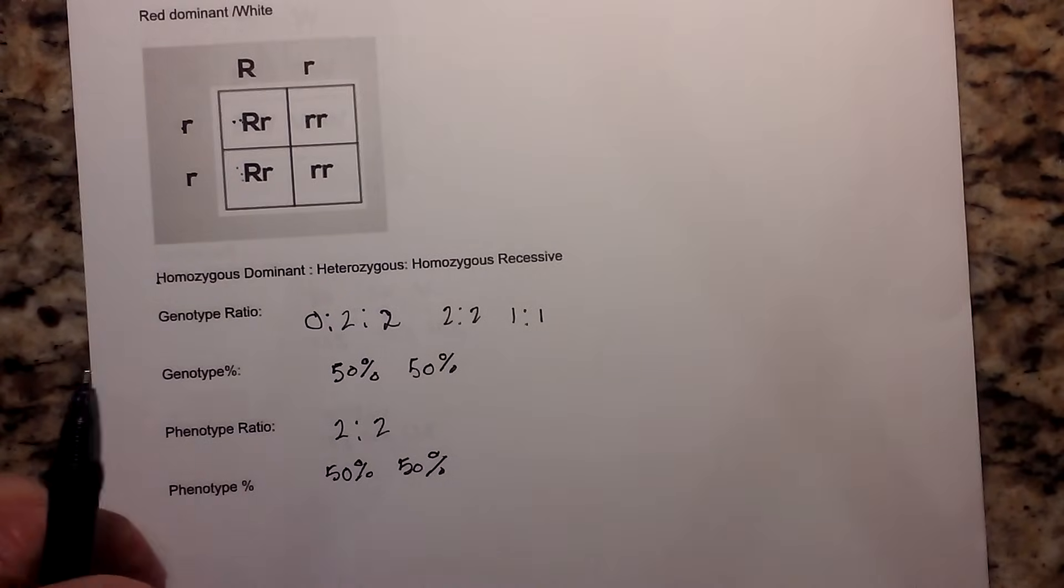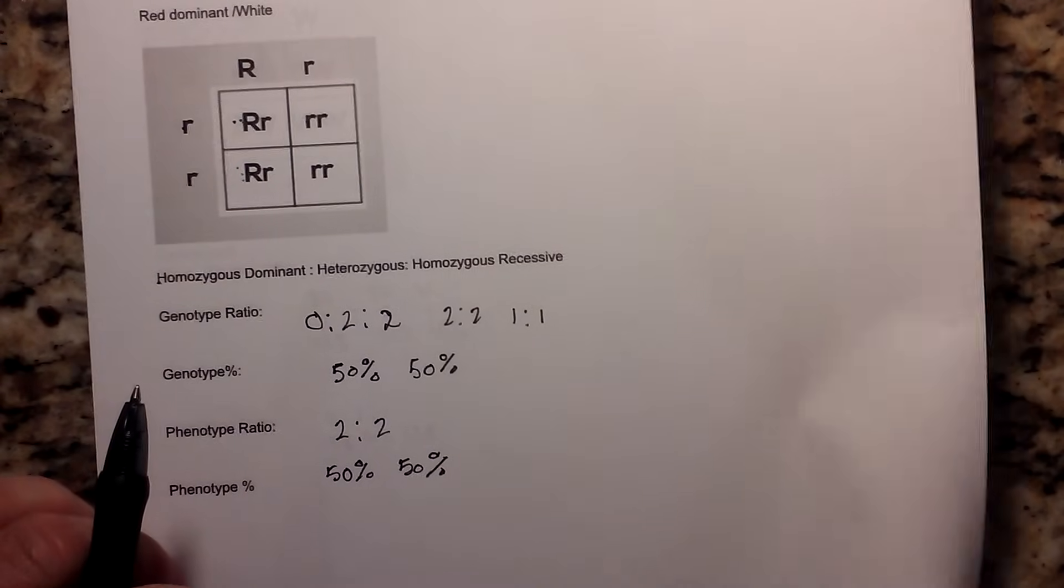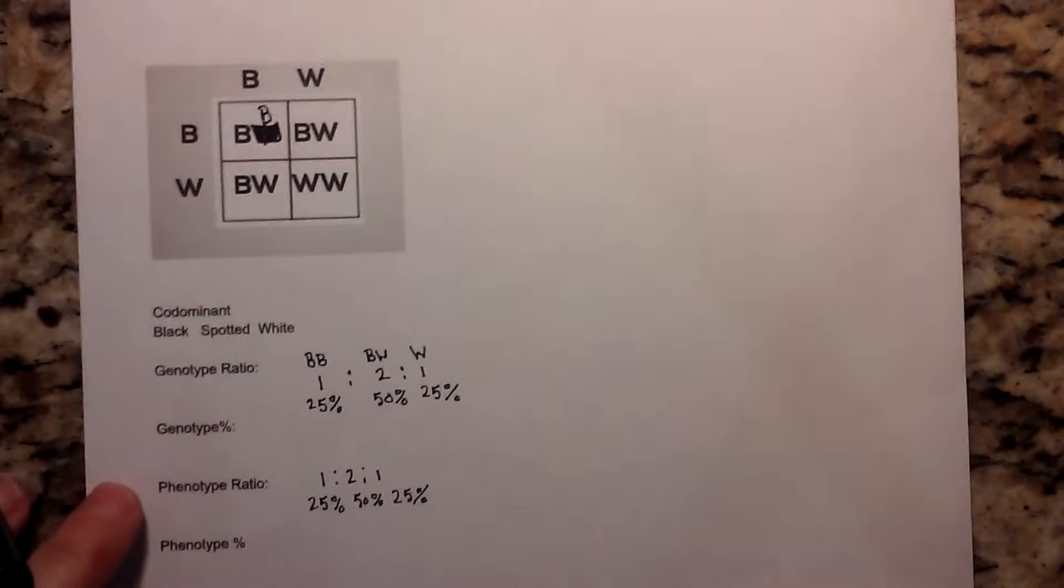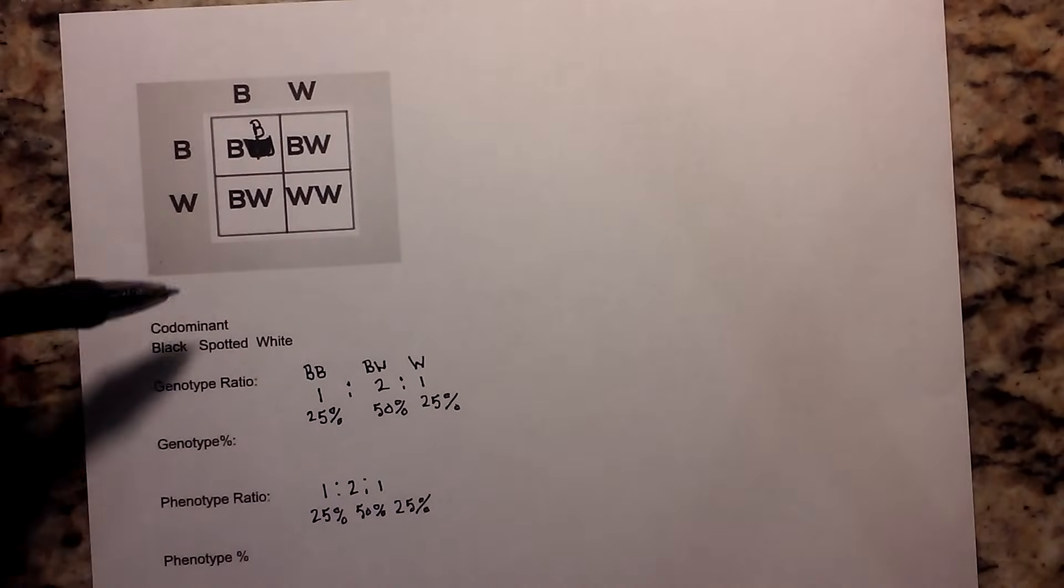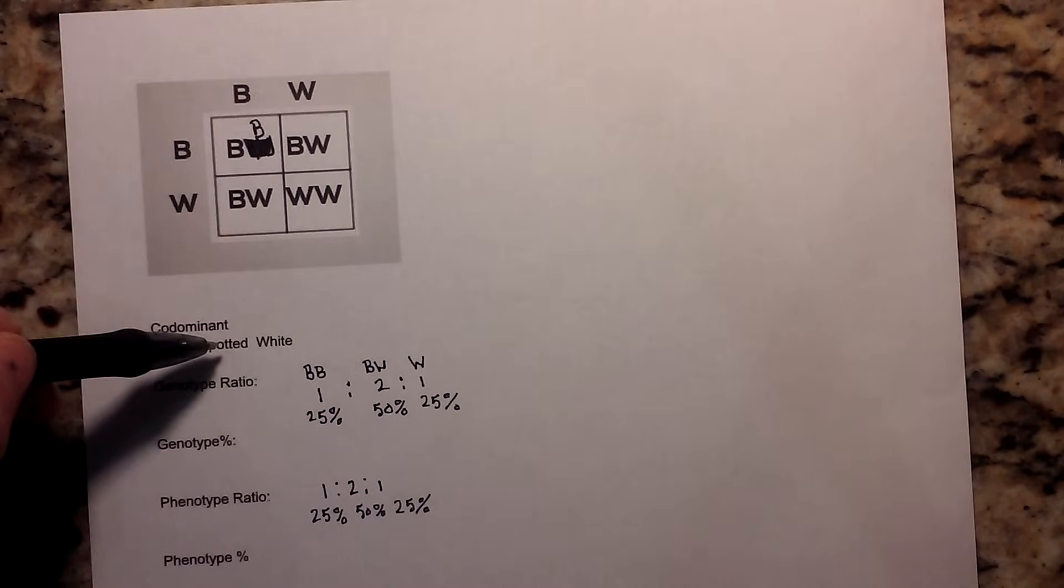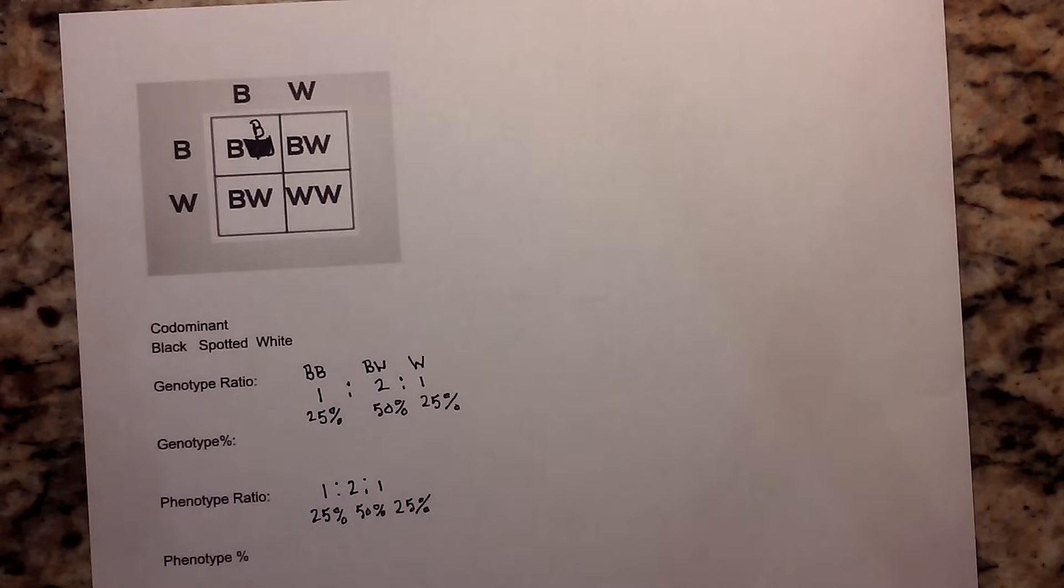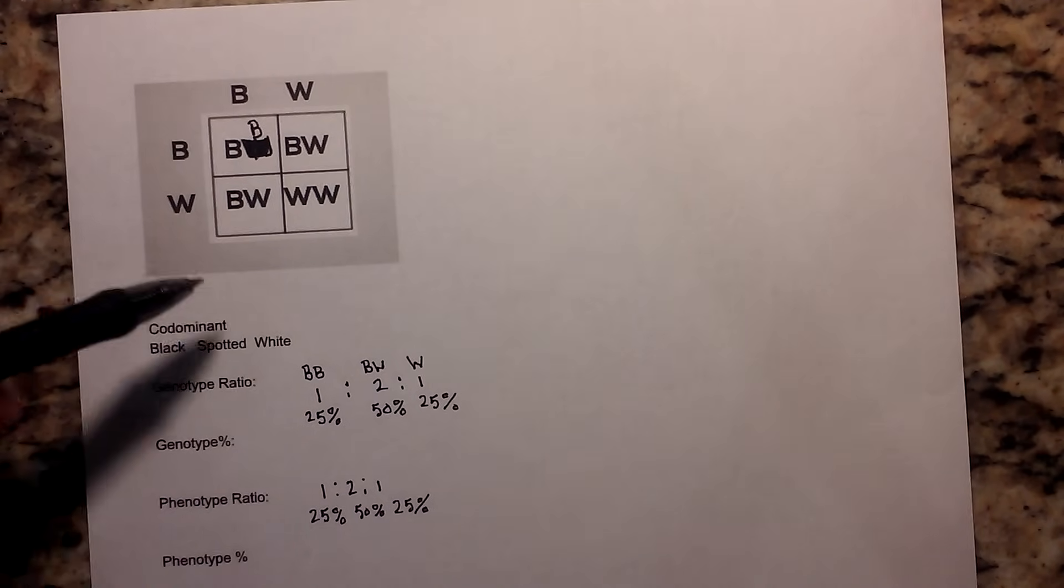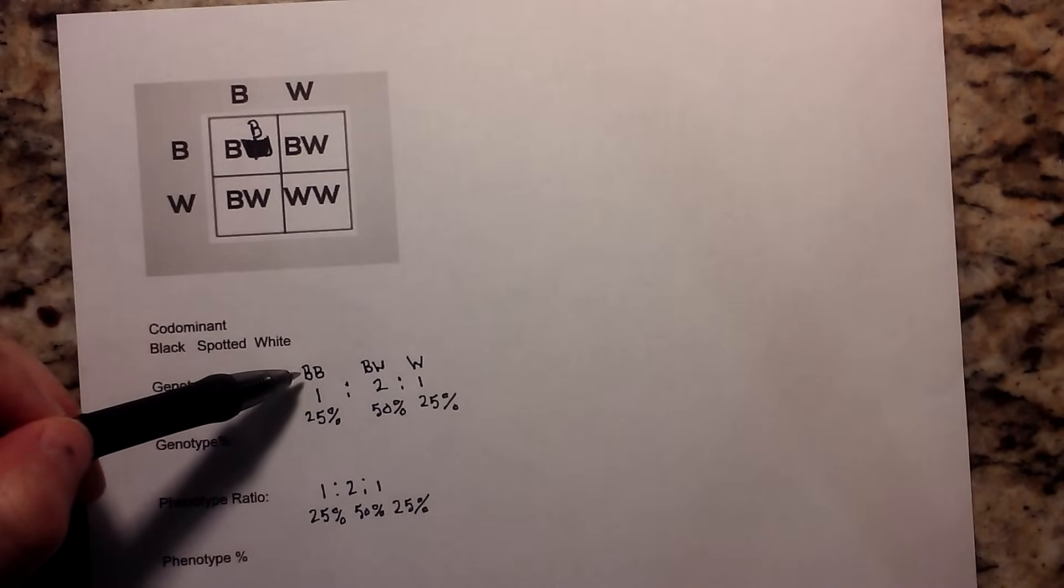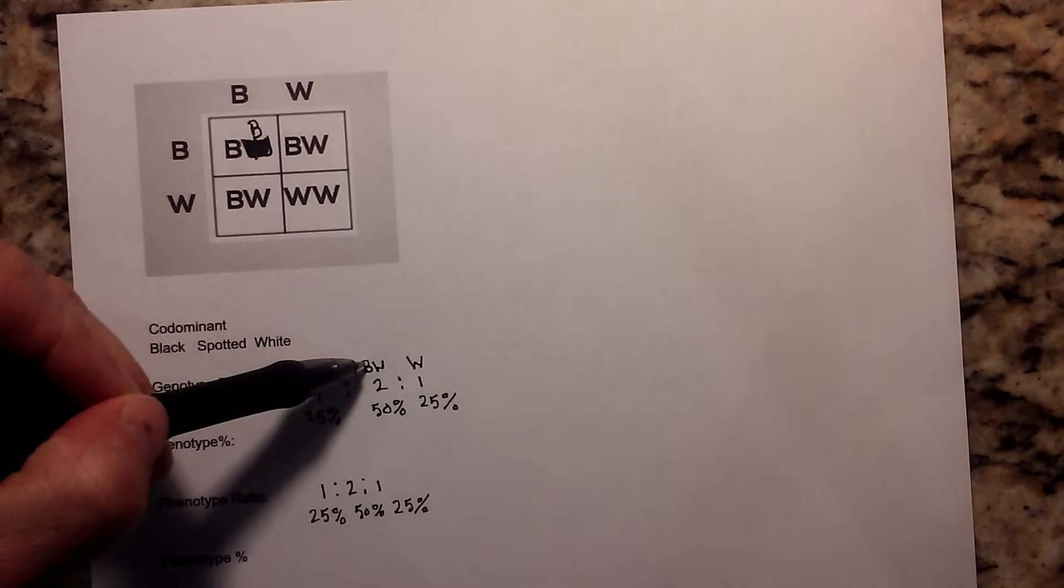And finally, let's look at one more example very quickly. Say you have a codominance situation. In this particular example, we have a chicken, and it can be black, spotted, or white. Spotted is another word for speckled. So, instead, we will have the ratio of the genotype BB, the genotype BW, and the genotype WW.